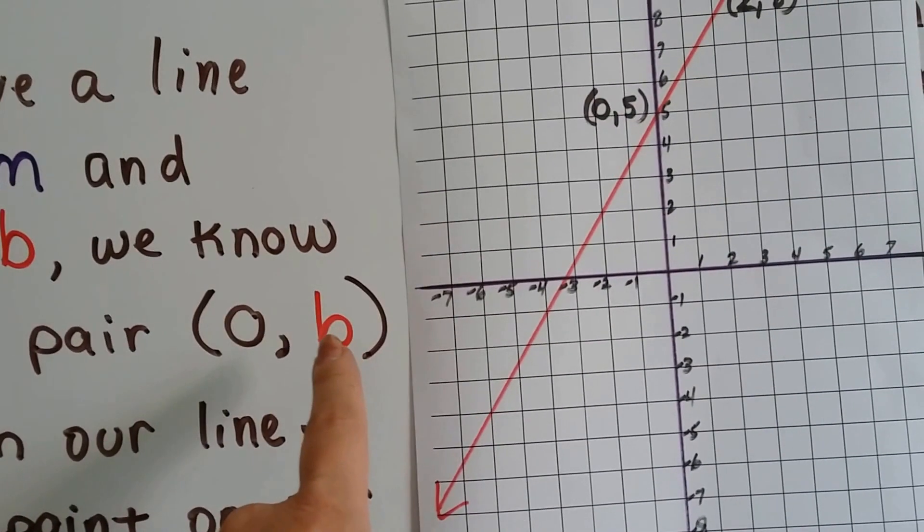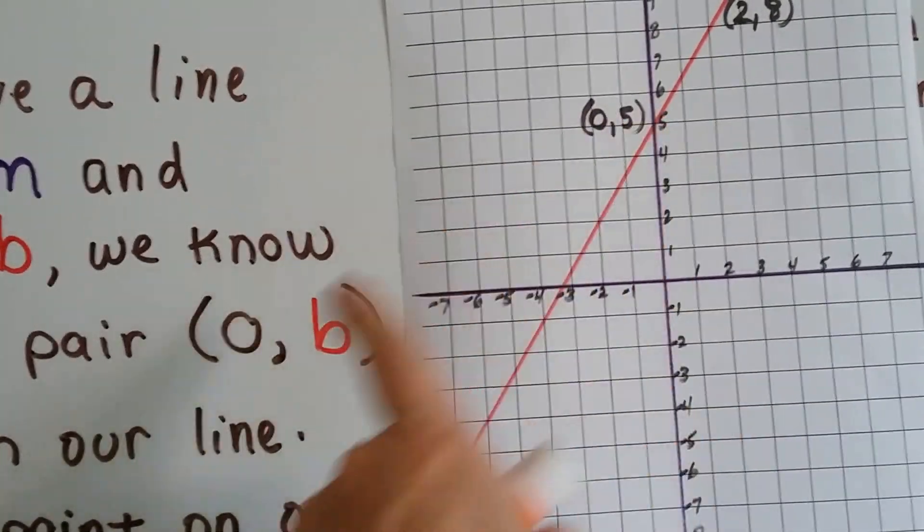So we're going to use (0, b) because b means y-intercept. So we're just going to use that b.